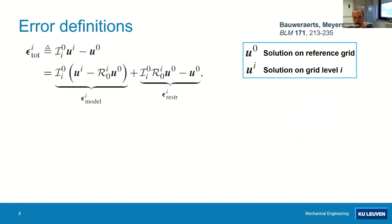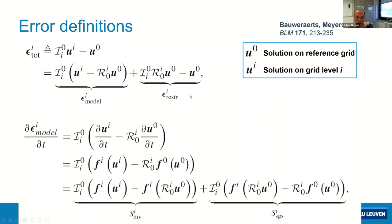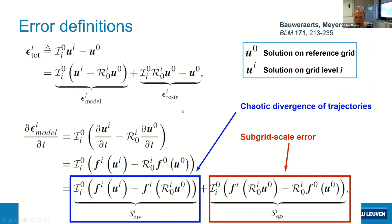We did a detailed error analysis — I refer you to the paper — where you can identify different components contributing to the error. You have the model error, which is the mismatch between the fine and the coarse grid. Then there is a restriction effect from representing reality on a coarse mesh. There are two additional contributions: one is what you could call the stochastic killer, still related to what you would typically call model error; and the other is the chaotic divergence of trajectories, because turbulence is a chaotic system. Even with perfect state estimation, you will not be able to predict the future indefinitely.